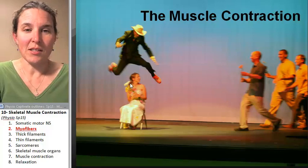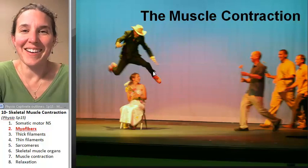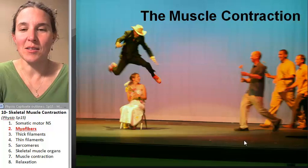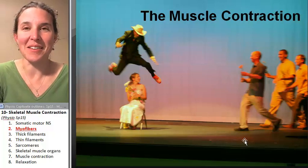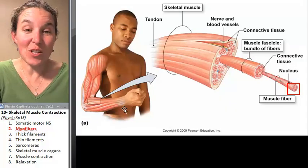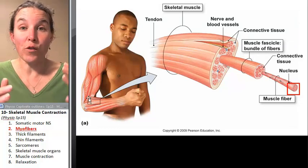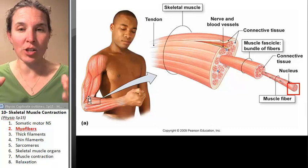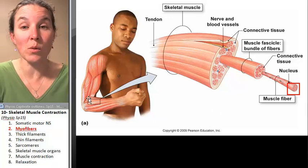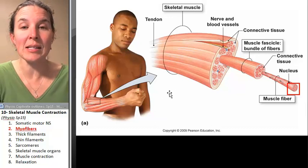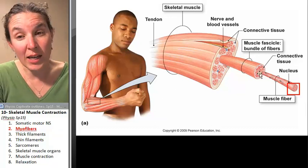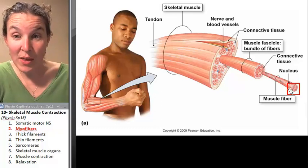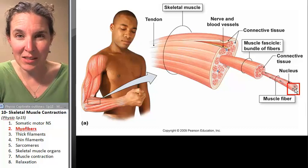The thing he was worried about on this day was he didn't want his pants to rip. This is a visual of an actual full muscle organ. We're going to back up at some point in this lecture and remind ourselves of what a muscle organ is, but I want you to take a look at the level of organization we're going to examine right now. And this right here is a muscle cell.